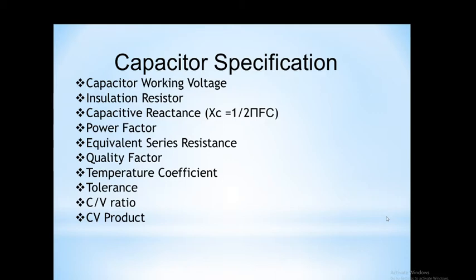The next specification is capacitive reactance. It is the opposition offered by a capacitor to an alternating signal applied to it. The reactance of the capacitor is given by XC equals 1 upon 2πFC, where F is the frequency of the signal, C is the capacitance, and XC is measured in ohms. If frequency F is 0, reactance is infinite; and if frequency is very large, reactance becomes 0.